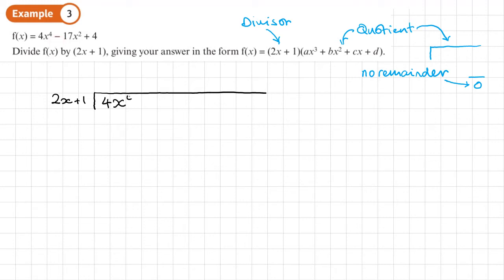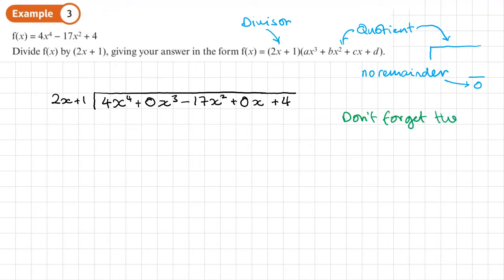So we write the dividend as four X to the fourth plus zero X cubed minus 17X squared plus zero X plus four. Don't forget the missing powers of X — every power from four down to zero must be included. If you leave out missing terms, the procedure won't work correctly.